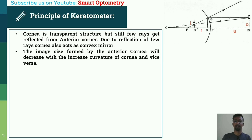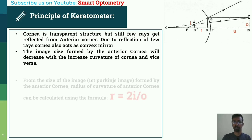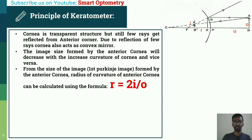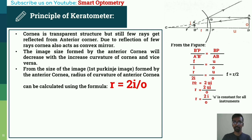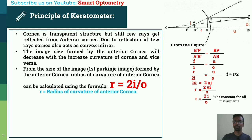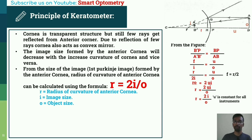The image formed by the anterior cornea will decrease with increased curvature of the cornea, and vice versa. From the size of the image formed by the anterior cornea, the radius of curvature of the anterior cornea can be calculated using the formula: r = 2i / o, where r is the radius of curvature of the anterior cornea, i is the image size, and o is the object size.